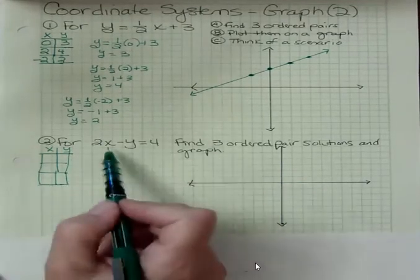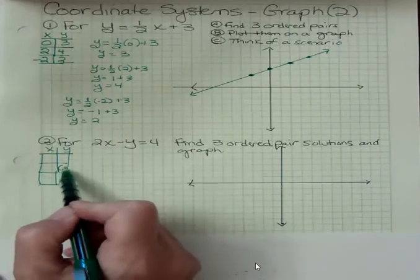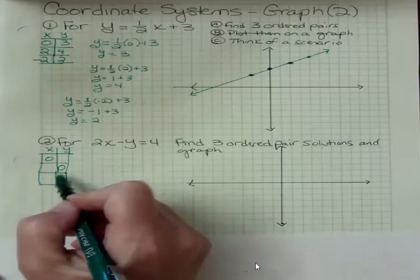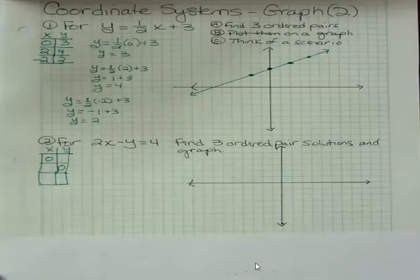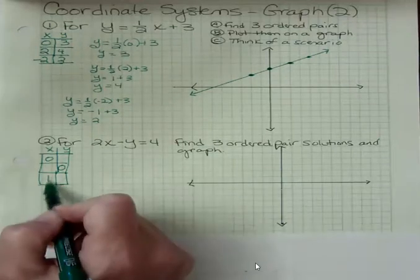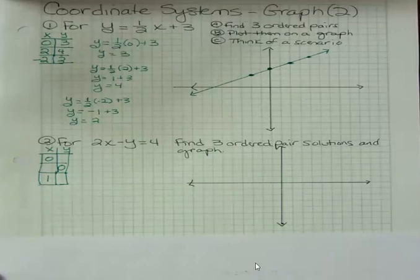But when I have this format, what I find to be easiest, because I get to choose my points and I can choose whatever I want, I always choose what if Y was zero, what if X was zero? I always do those zero points because those are important points that we'll talk about in the next videos. And then I have to choose one more just for a checkpoint. I'm going to choose what if X was one. So there's my three points that I'm going to pick.